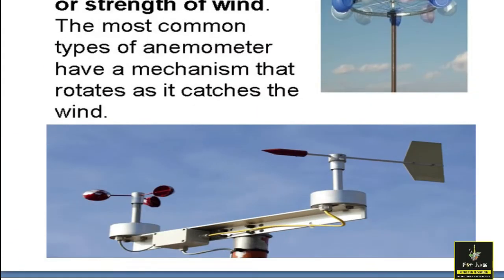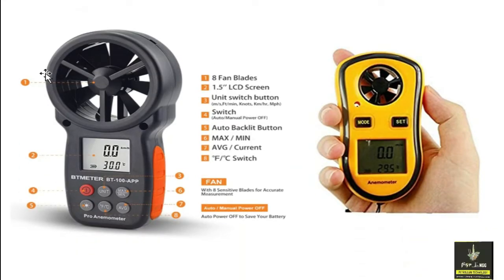Now by the help of windsock they are going to measure the speed. This is also the anemometer which is used to calculate the wind speed but it is measured digitally. Here, eight fan blades are available. This is the device which is used to measure the wind speed. It has a 1.5 inch LCD screen. There are so many switch buttons available. Temperature can be measured in centigrade or fahrenheit, and there are different units available: knots, kilometer per hour, miles per hour, meter per second. You can take different types of readings from these anemometer devices.